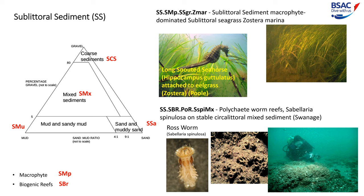Here are two examples on this slide. If we were to try and search for the long-snouted seahorse, we might want to look for a code of SS.SMP.SSGR.ZMAR — which basically means sublittoral sediments, macrophyte-dominated, sublittoral sea grass, and its Zostera marina. On the next example, if I was to try to hunt for a Ross worm, I may look for the code SS.SBR.POR.SSPI.MX — which basically means sublittoral sediment, biogenic reefs, polychaete worm reefs, Sabellaria spinulosa, on a stable circalittoral mixed sediment. And in fact this is at Swanage.